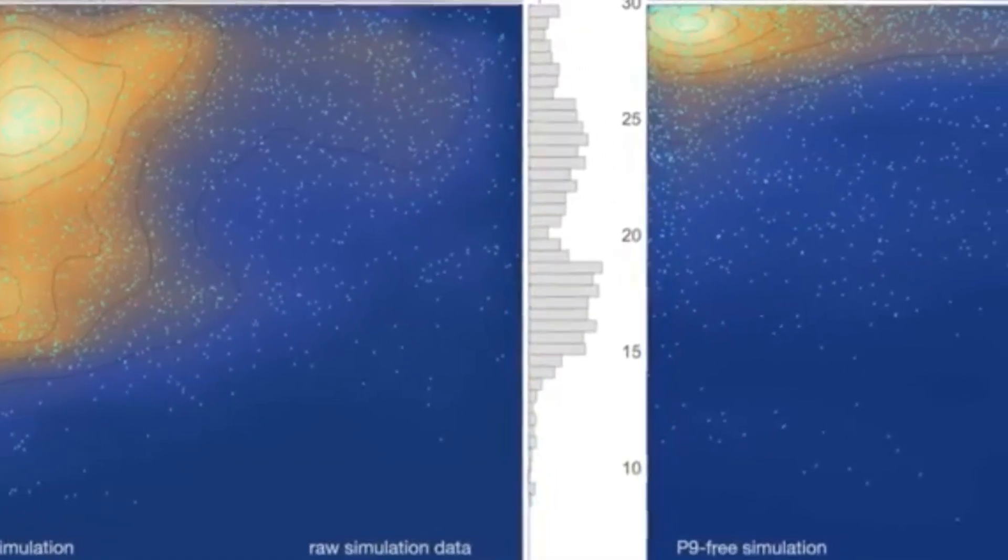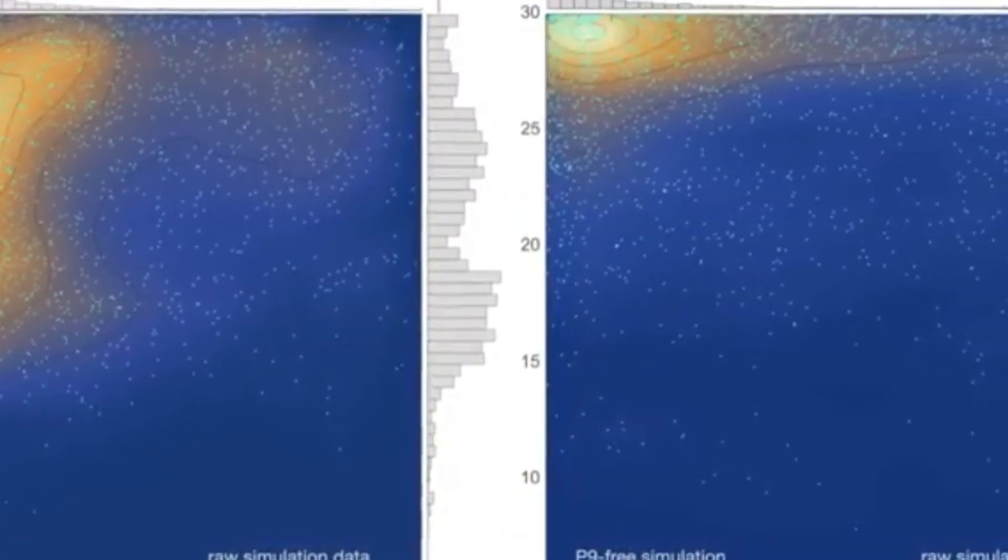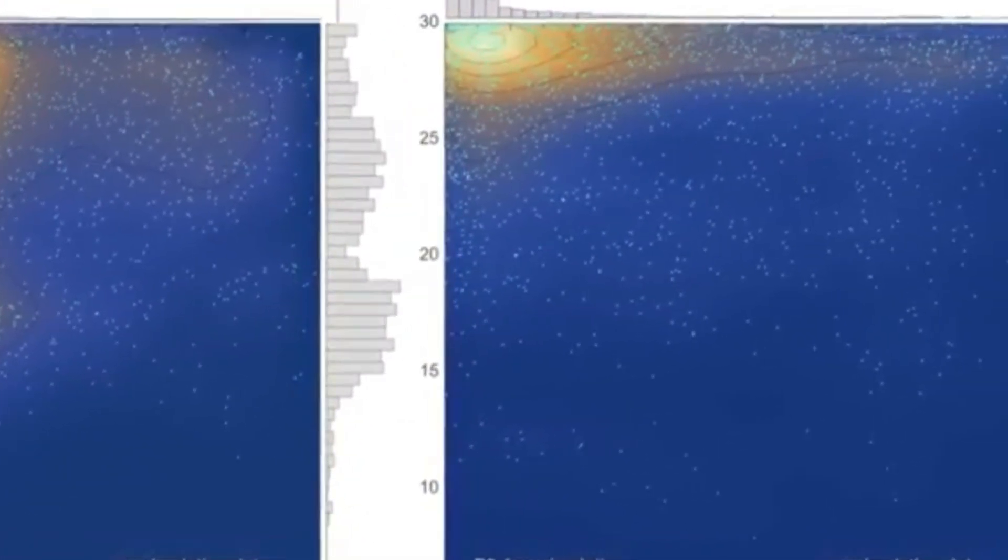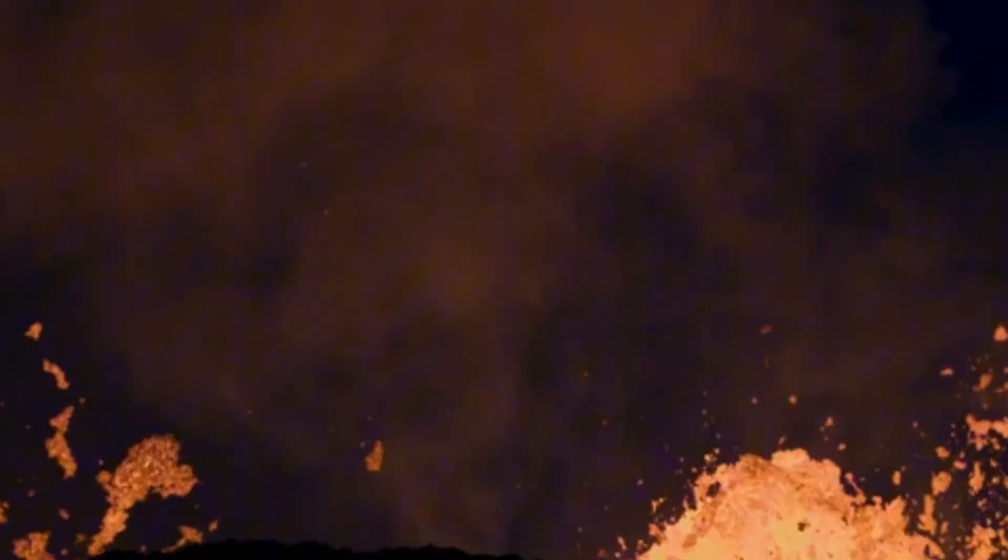If, on the other hand, Planet 9 only weighs 2.22 Earth masses, it could even approach the Sun at a distance of 85 astronomical units. Furthermore, the data showed that the planet's orbit is inclined by about 16 degrees to the main plane of the solar system.